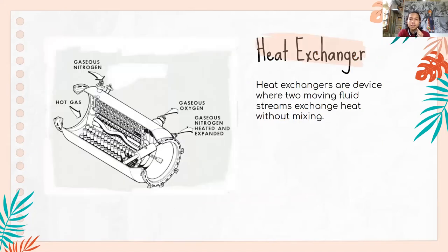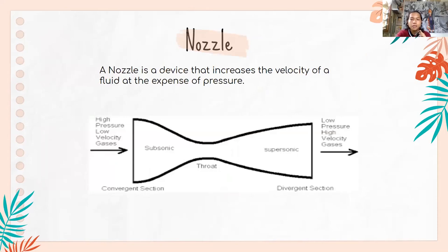The second device is the heat exchanger. A heat exchanger is a device where two moving fluid streams exchange heat without mixing. The heat from the hot gases is used to convert liquid oxygen into gaseous oxygen.